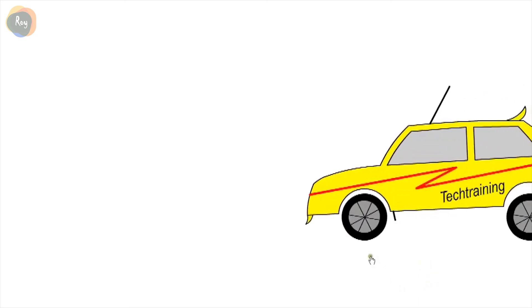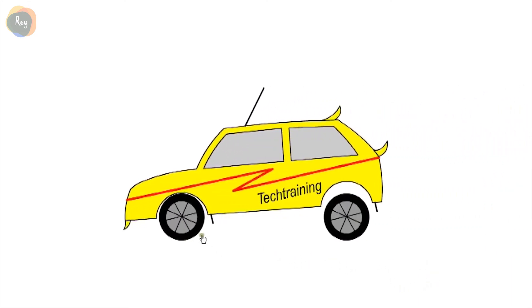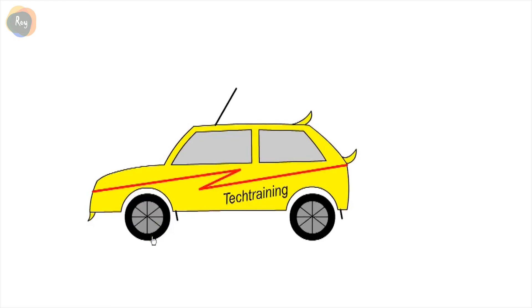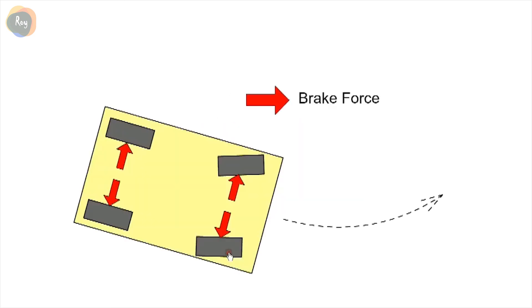Under heavy braking, the weight of the car is transferred towards the front. Therefore the front wheels do most of the braking. Also, when a car corners, the weight will be transferred to the outside wheels.